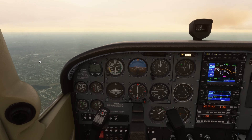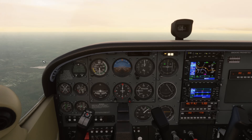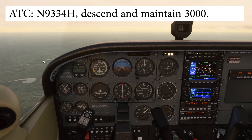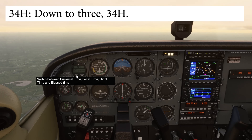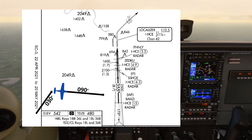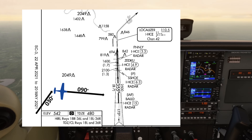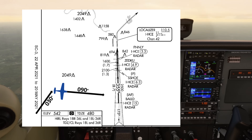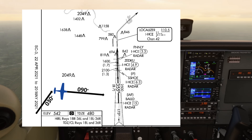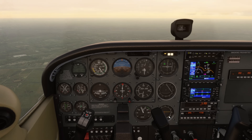In order to get ready for the approach, the controller might tell us to go down in altitude to get closer to the altitudes listed on the approach plate. November 9334 Hotel, descend, maintain 3,000. Down to 3,000 — there we have it. Why 3,000? If we look at the approach plate and see where we're approaching from, the controller has us going on a vector putting us right between the two fixes, SHOE and BALD on the approach course. That 2,500 foot number is the altitude limit on that segment between BALD and SHOE, so we have to be at least higher than that. We can even anticipate that when we get the actual clearance to join the localizer, the controller might tell us to descend down to 2,500 feet.